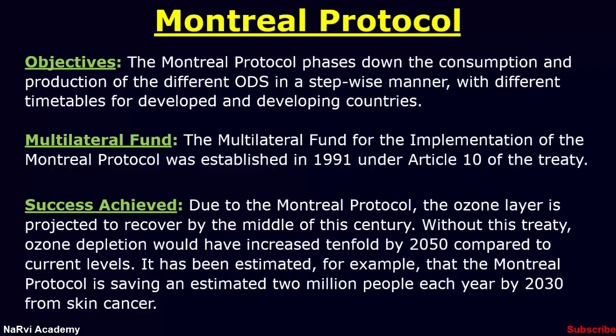To date, the parties to the protocol have phased out 98% of ozone depleting substances globally compared to 1990 levels. Because most of these substances are potent greenhouse gases, the Montreal Protocol is also contributing significantly to the protection of the global climate system. From 1990 to 2010, the treaty's control measures are estimated to have reduced greenhouse gas emissions by the equivalent of 135 gigatons of CO2.